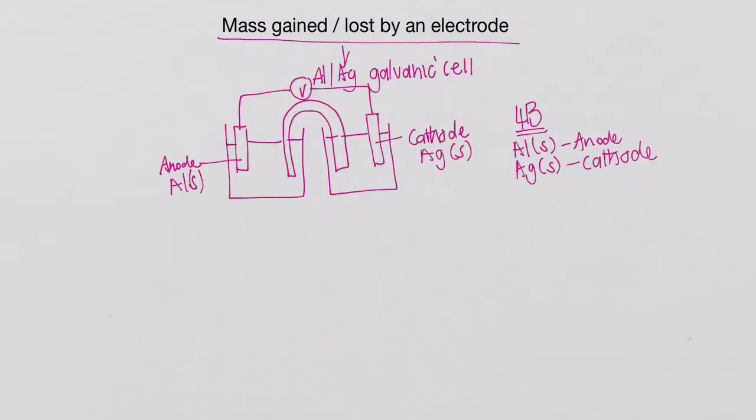Then remember that the cathode is where reduction takes place and the anode is where our oxidation takes place.